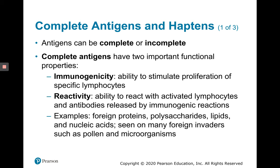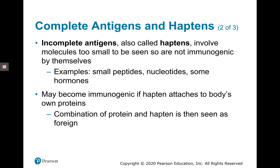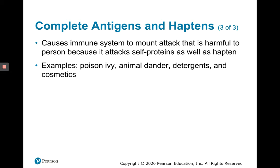Examples of complete antigens include foreign proteins, polysaccharides, lipids, and nucleic acids. They're seen on many foreign invaders such as pollen and microorganisms. Incomplete antigens, also called haptens, involve molecules too small to be immunogenic or reactive. Examples include small peptides, nucleotides, and some hormones. They may become immunogenic if the hapten attaches to the body's own proteins, because the combination of body protein plus hapten can be seen as foreign. This would cause the immune system to attack not just the hapten but the self-protein as well.